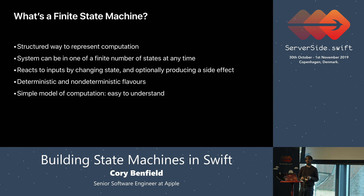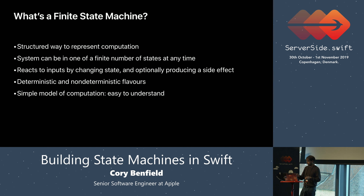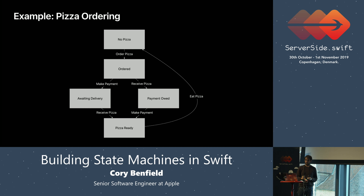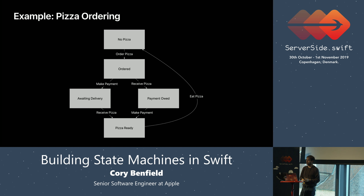The best thing about finite state machines — the reason I want to preach about them today — is that they are extremely simple to understand and reason about. To give an example, I'm going to use the most boring but vital example I could think of, which is pizza. I've drawn up here a finite state machine that models ordering a pizza and getting it delivered to my house.